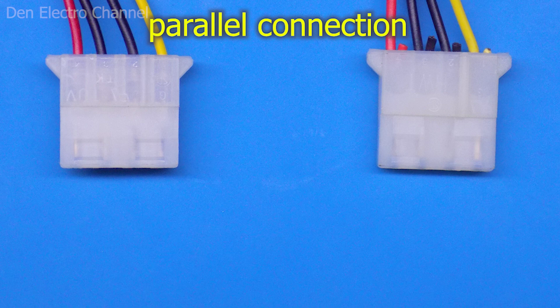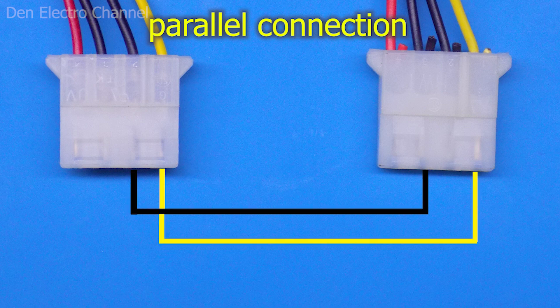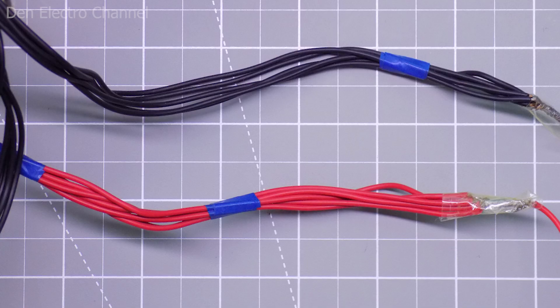Now let's analyze the situation when you need a parallel connection of power supplies. Here, you need to take the minuses from both power supplies and connect them together. You need to do the same with the pluses. If the wires heat up during operation, then, just like in the previous example, you can take more wires.